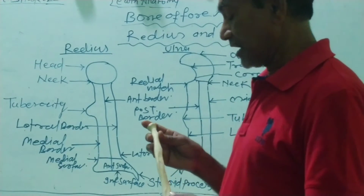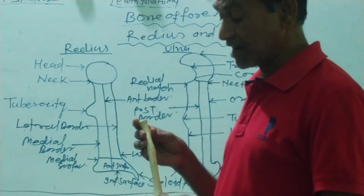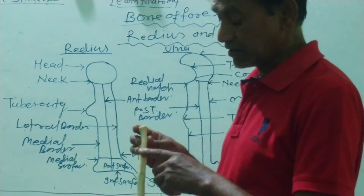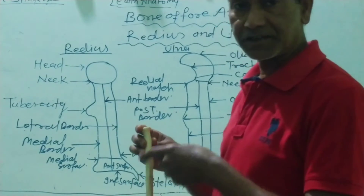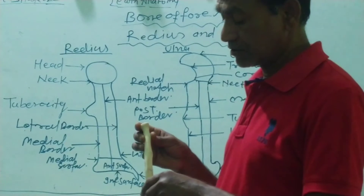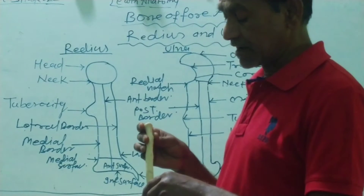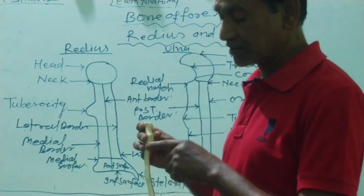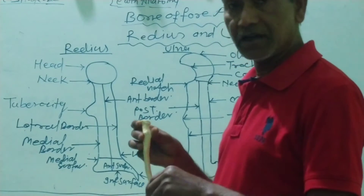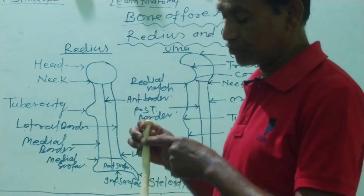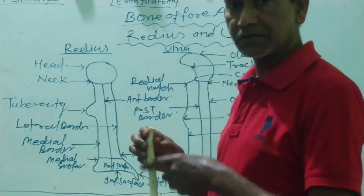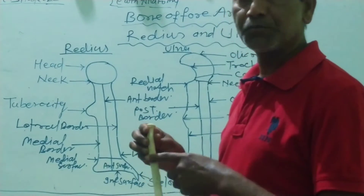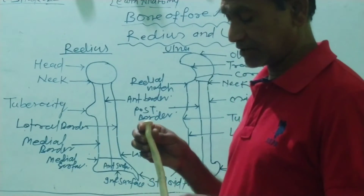Now the surfaces of the shaft of the radius: number one, the anterior-lateral surface; number two, the anterior-medial surface; and number three, directed posteriorly, the posterior surface.